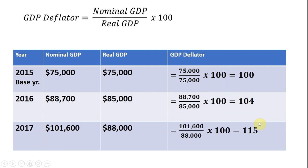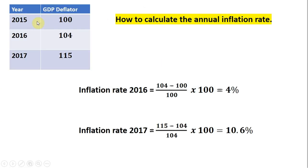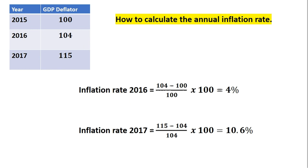Now we're going to take this GDP deflator data and use it to calculate the annual inflation rate. Rewriting our GDP deflator data in a table, this is just a standard percentage change formula. The inflation rate for 2016 is the GDP deflator in 2016 minus the previous year's GDP deflator of 100, all divided by the starting value of 100. Multiplying by 100 to get out of decimal format, we get an answer of 4% — so on average prices rose 4% over the year 2016.